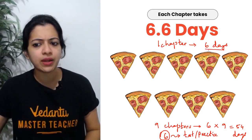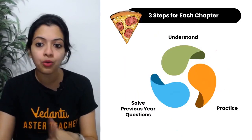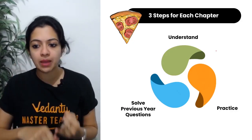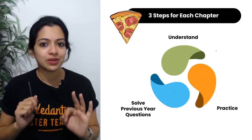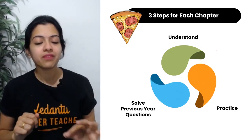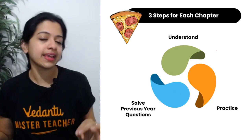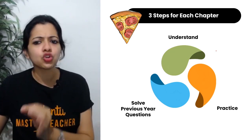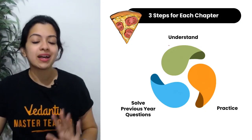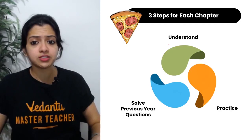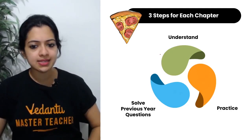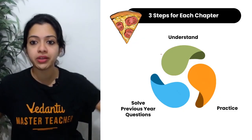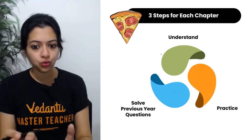Now, what do you do in those six days for each chapter? There are three steps you must include: first, understand the chapter; second, practice; and finally, solve past years' questions. You can even go in reverse order. The split could be two days for understanding, two for practice, two for past years' questions — or three plus two plus one, or four plus one plus one. I leave that freedom entirely to you.